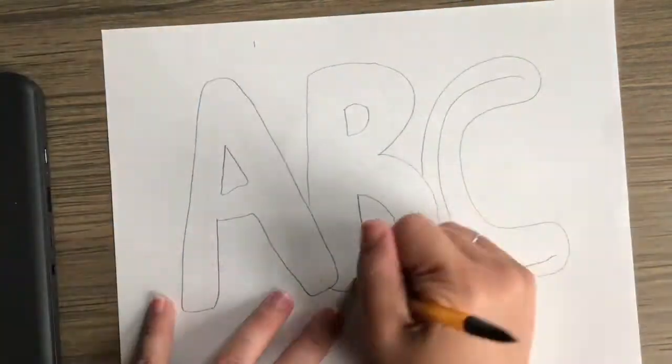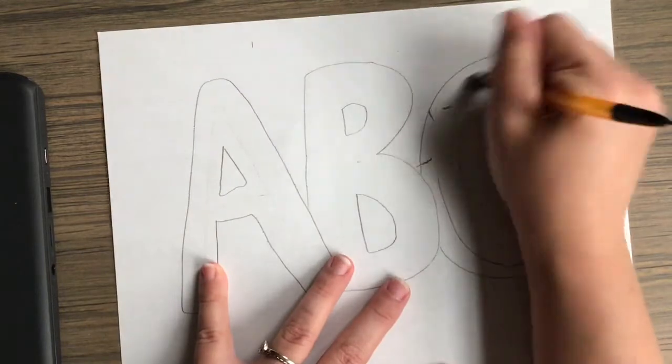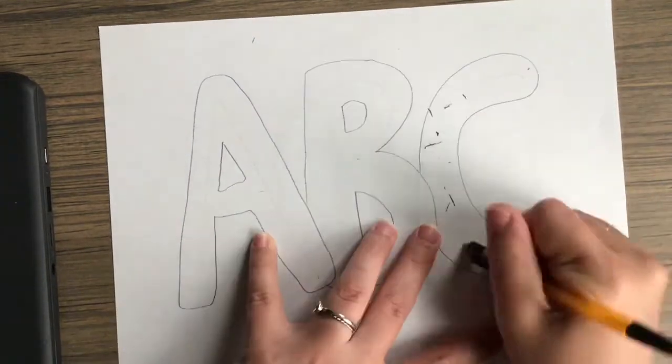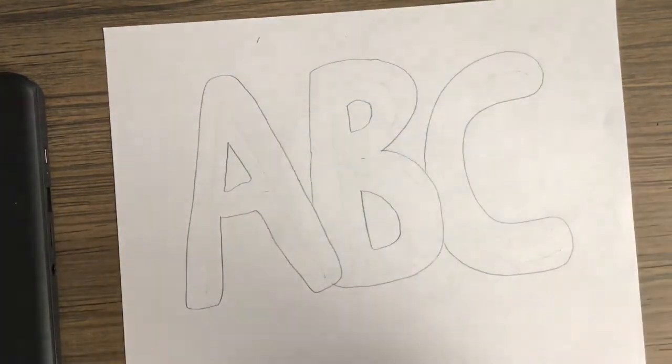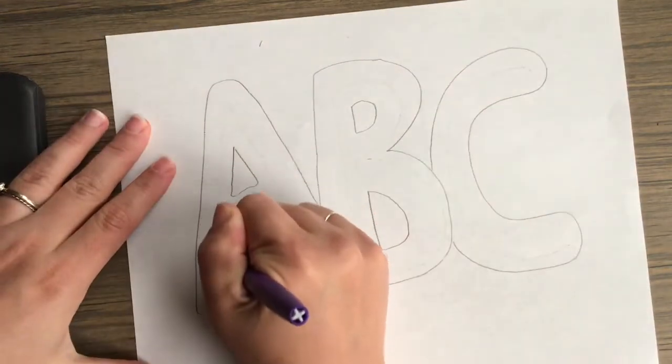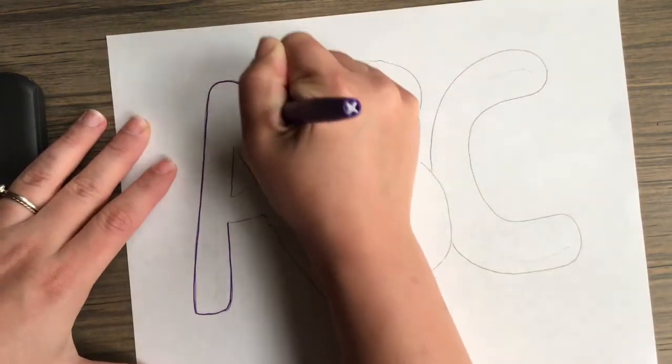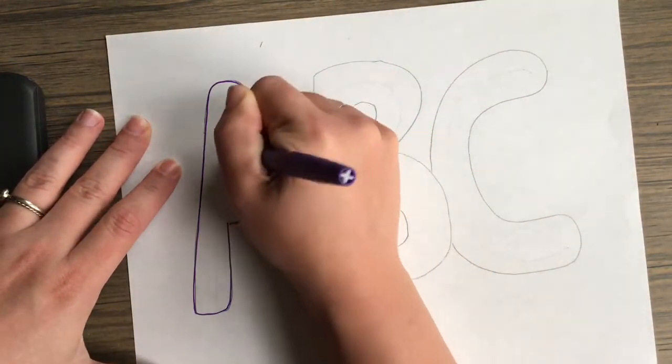When you're done erasing, you'll be filling up Zentangle designs and patterns in the space outside of your letters. Zentangle is a drawing exercise that is supposed to make you feel calm or zen or peaceful.